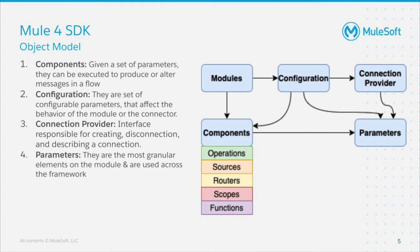Connection Provider: the module connection provider is responsible for creating, disconnecting, and describing the connection so that the runtime can handle it properly. And finally, you have parameters, which are the most granular elements of the module and are used throughout the framework. For example, during the use of a DB connector, we define values like input parameter, SQL query, and so on.